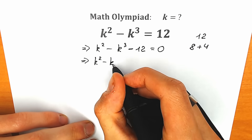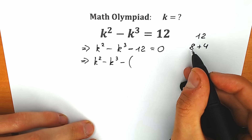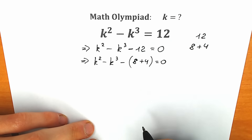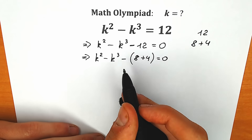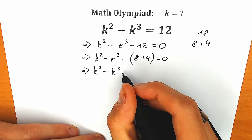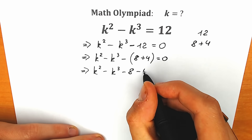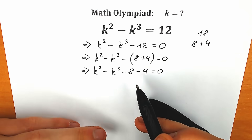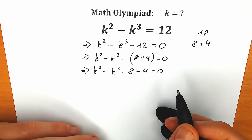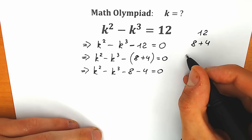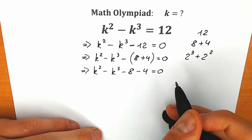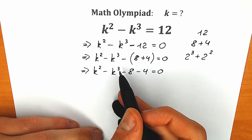So we have k-squared minus k-cubed minus, instead of 12 we write 8 plus 4, equal to zero. A lot of students may be asking what we're going to do next. We have 8 and 4. This 8 can be written as 2-cubed and this 4 can be written as 2-squared. So we can easily work with cubes and squares, considering the fact that we have squares and cubes in the beginning.